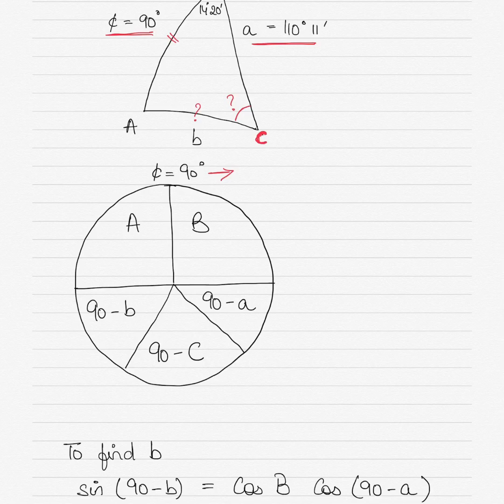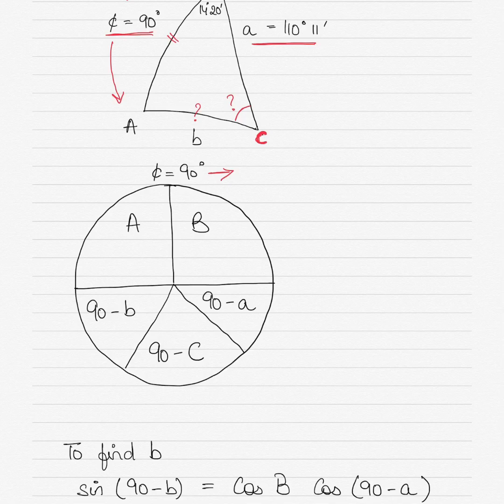In the top semi-circle, you write the angles which are next to side C, which are angle A and angle B. You can write them in any order — B then A, or A then B, it doesn't matter. Opposite to A, you write 90 minus the side opposite to A, which is 90 minus small a. Opposite to B, you write 90 minus side B.